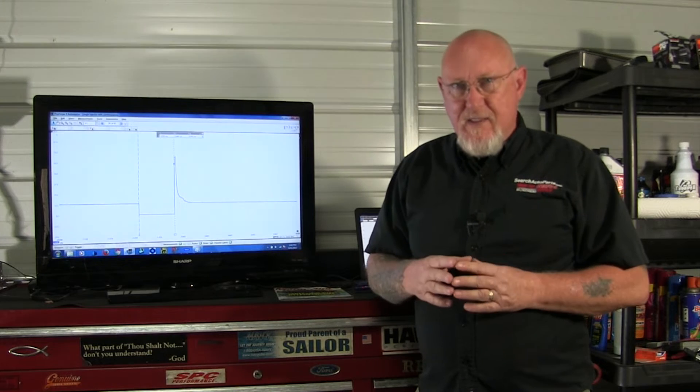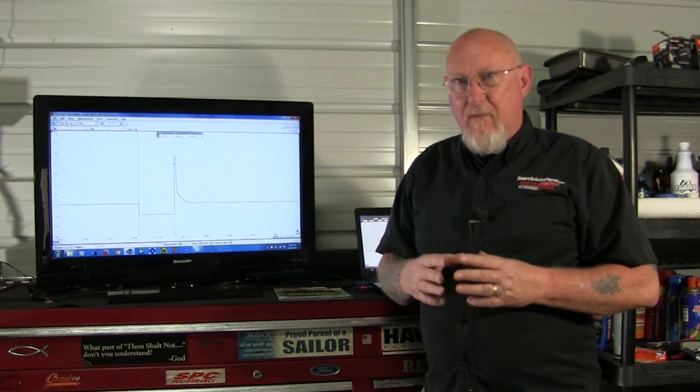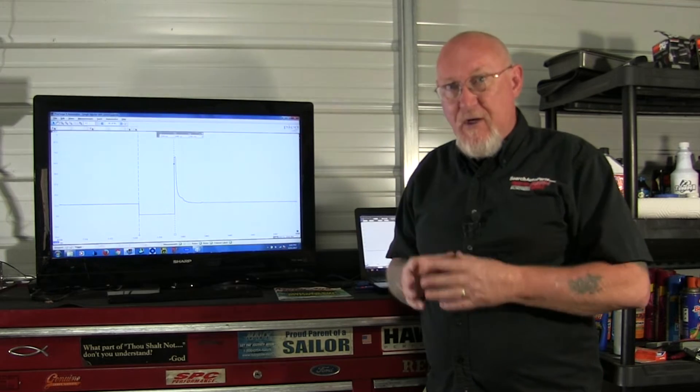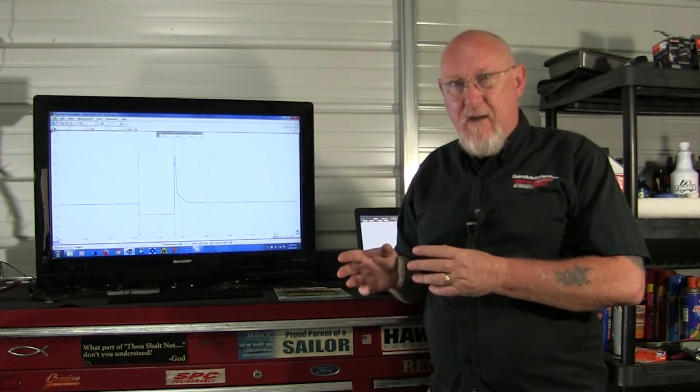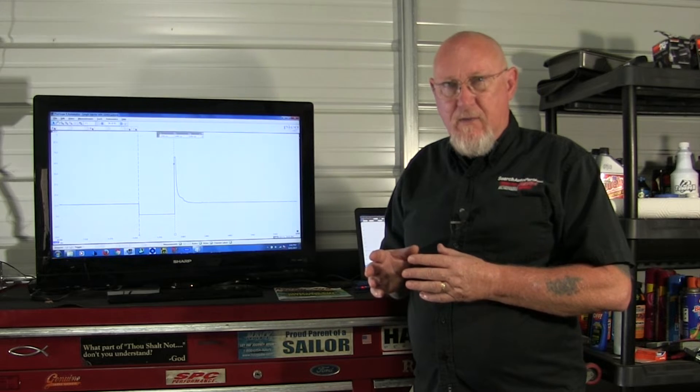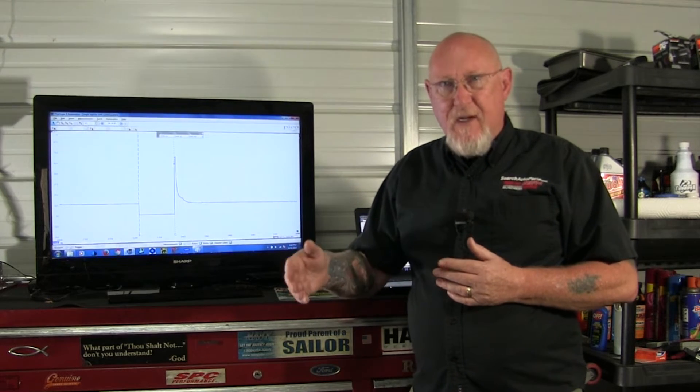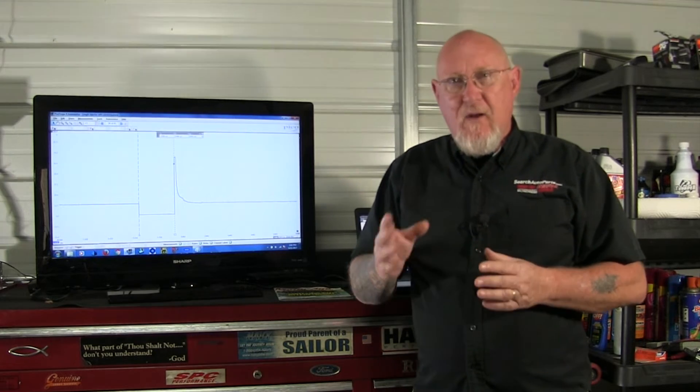The whole idea is for the PCM or ECM to provide the right amount of fuel given the amount of air going into the cylinder. Most vehicles are now equipped with a mass airflow sensor, so we have a very good picture of how much air is getting into the engine — and therefore into each cylinder. The computer can measure that amount and calculate how much fuel to add. The computer knows the fuel system pressure and the volume of fuel that injector will flow for any given time it's open — whether it's open for one millisecond, two milliseconds, or three milliseconds.